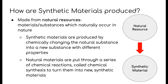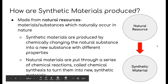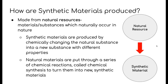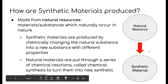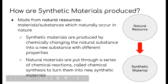As you know about chemical reactions, we begin with a starting substance or a reactant, which goes through a chemical change to produce a new substance. This is how synthetic materials are produced. The natural resource — the starting substance — is put through a series of chemical reactions which changes it into a brand new type of material with a completely different set of properties. We call these new substances synthetic materials.